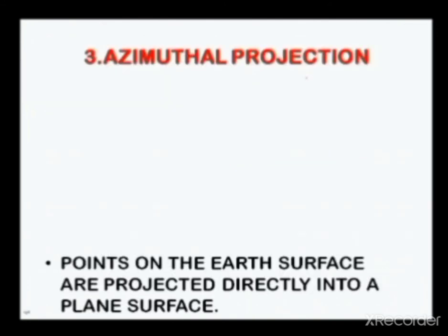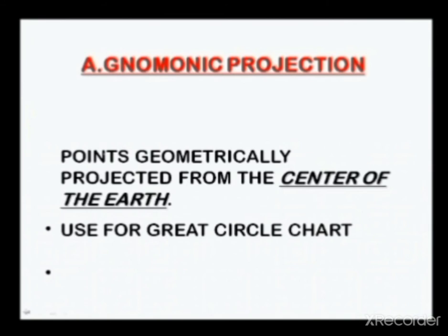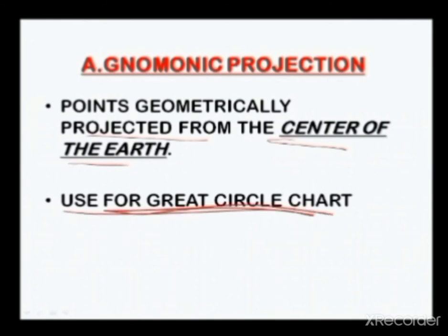In the azimuthal projection, the points on the earth's surface are projected directly onto a plane surface. We have three types. One is the gnomonic projection, where points are directly projected from the center of the earth, and that projection is used for a great circle chart.